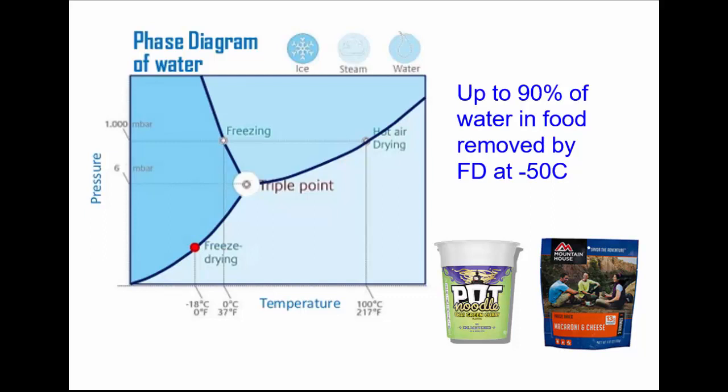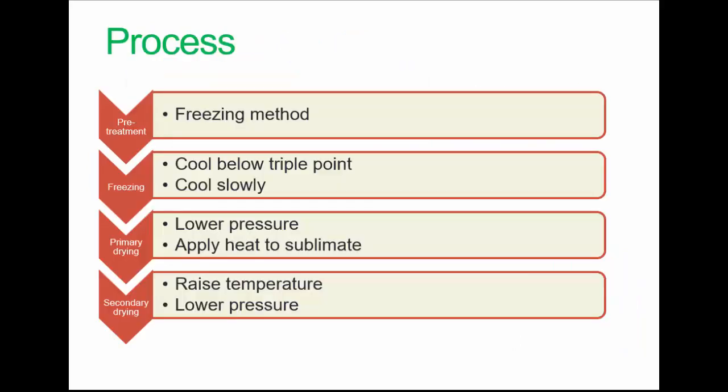There's a phase diagram there which you may not have come across. It's just a way of representing the physical states of a substance under different conditions of temperature and pressure. It takes me back to my old physical chemistry lecture days. Here's the process—we have a freeze dryer down in the food lab and have used it to make healthy pot noodles, for example.